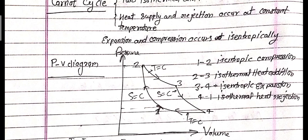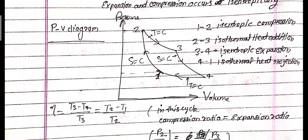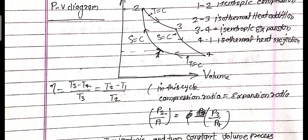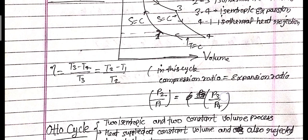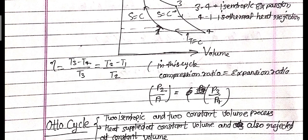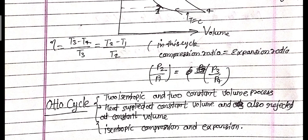Process 4 to 1: isothermal heat rejection. The efficiency of this cycle is calculated using the formula: efficiency = (T3 - T4) / T3, or equivalently (T2 - T1) / T2. In this cycle, the compression ratio equals the expansion ratio, so P2/P1 = P3/P4.